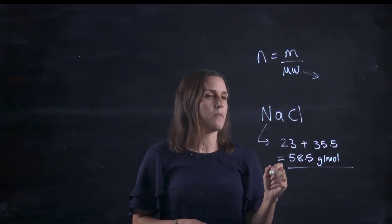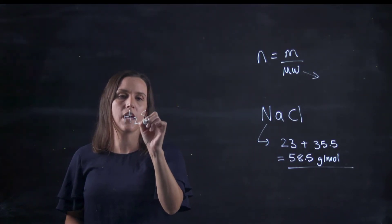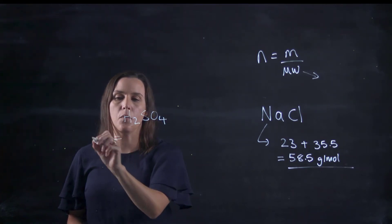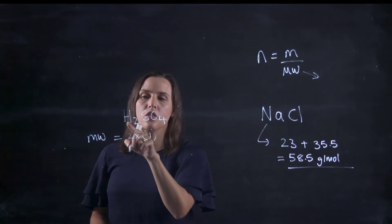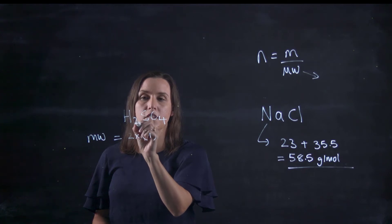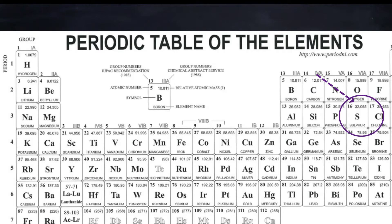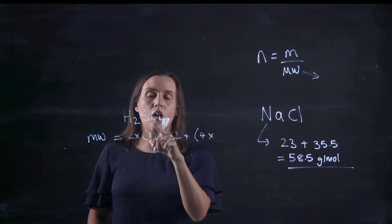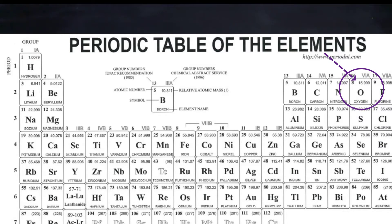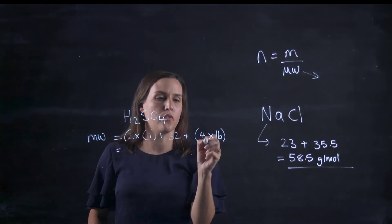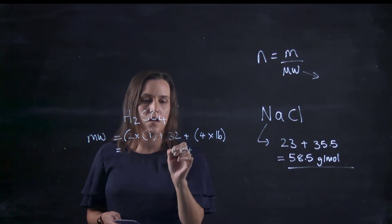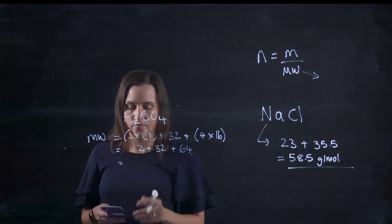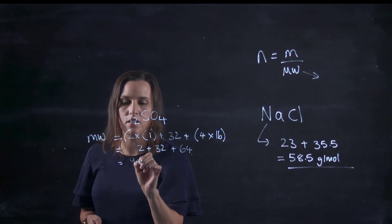I'll just do one more so you can see how it's done. Let's do sulfuric acid, so H2SO4. The molecular weight or molar mass would be two hydrogens, so looking up hydrogen it's around about one, so I'll just round it to one. We've got two lots of the hydrogen, so the subscript two says I've got two hydrogens. I've got one sulfur, so sulfur is 32, and then we've got four lots of oxygen which is 16 each. So I've got 64 plus 32 plus 2, so I get 98 grams per mole.